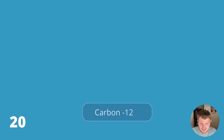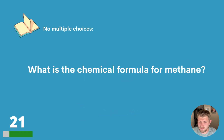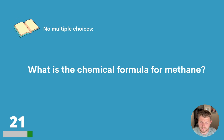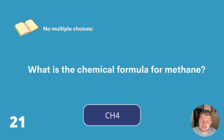Question twenty-one. What is the chemical formula for methane? There's no multiple choices — what is the chemical formula for methane? The answer is CH4.